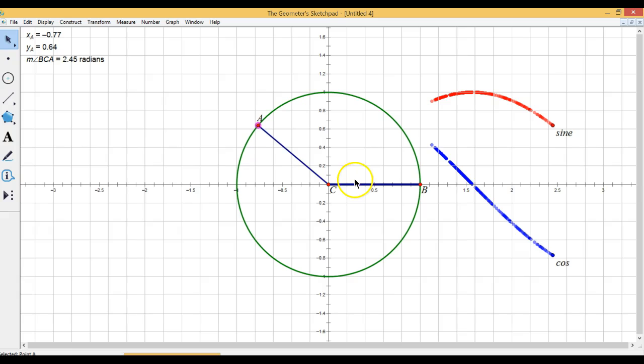Okay, so I've opened up my angle is now 2.45 radians. So that's where my point is on the x axis, 2.45. You can see that matches up.